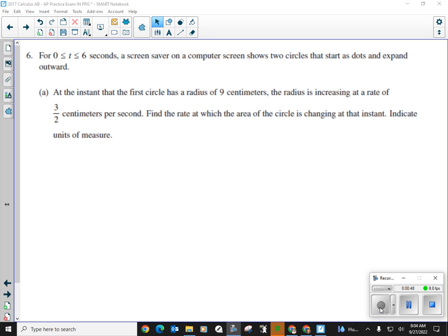Question six starts out by saying, for time between zero and six seconds, a screensaver on a computer shows two circles that start as dots and expand outward. 6A, at the instant that the first circle has a radius of nine centimeters, the radius is increasing at a rate of three halves centimeters per second. Find the rate at which the area of the circle is changing at that instant. Indicate the units of measure.